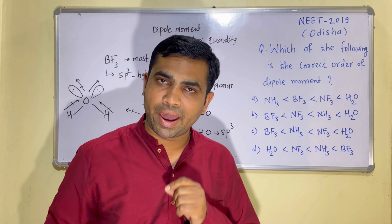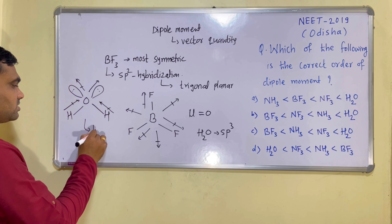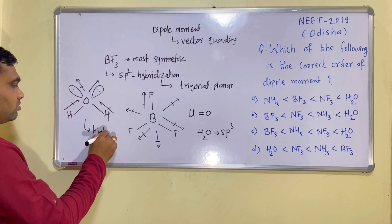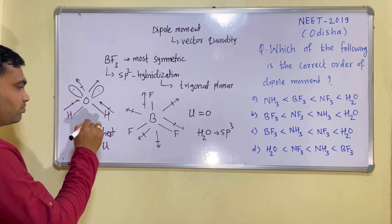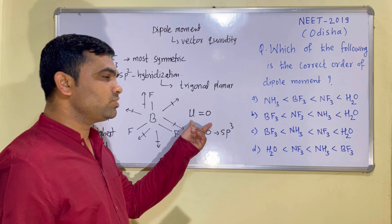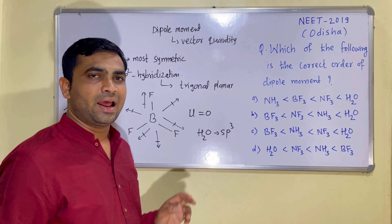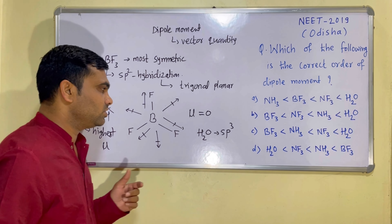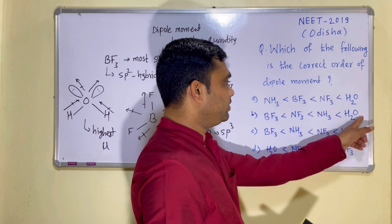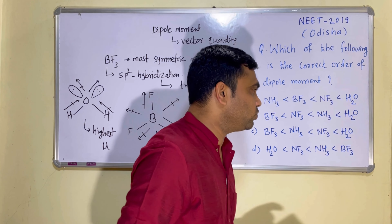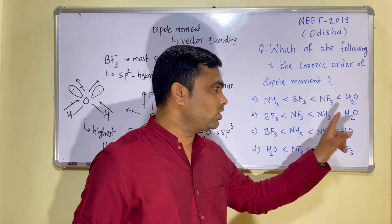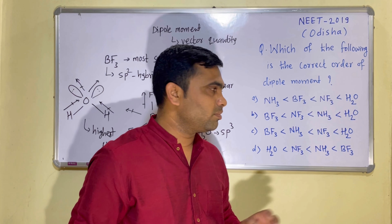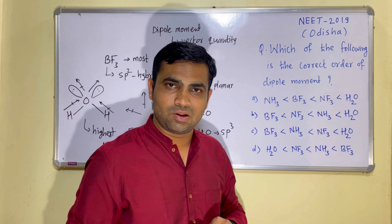Therefore, among all these examples, water has the highest dipole moment — the highest mu value. So, the lowest mu (zero) belongs to BF3 and the highest mu belongs to water. Looking at options B and C, BF3 appears first and water appears last, so both options still seem correct. We now need to compare NH3 and NF3 to finalize the answer.